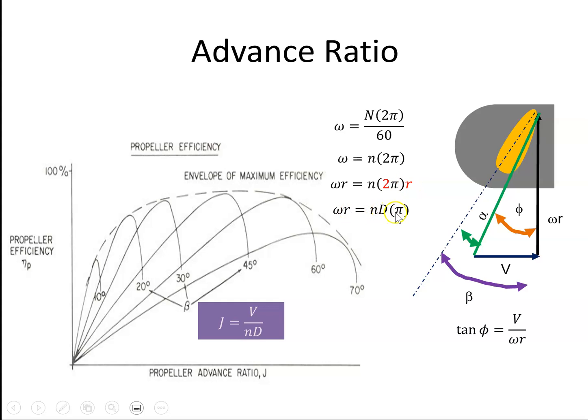So omega r is n d pi. So I can replace this with n d pi, and you can see that the tan of this angle is very related to the advance ratio. And that makes sense. Angle of advance, advance ratio.